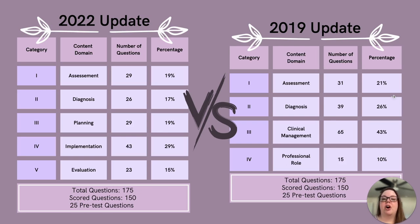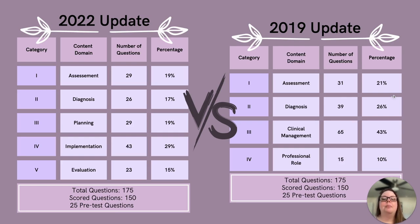The weights and percentages have also been redistributed throughout the exam. The 2019 exam placed the biggest emphasis on clinical management, but now we see the biggest emphasis being placed on implementation. I do want to note here that there have been no changes in the total number of questions. There are still 175 questions in total, with 25 pre-test questions that are not graded and 150 questions that count towards your overall score.